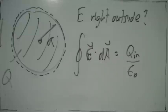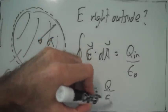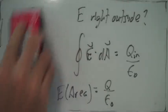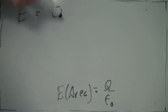We have the electric field at the Gaussian surface times the area of the Gaussian surface equals the charge inside divided by epsilon naught. We know the area of the Gaussian surface right outside, so we can calculate the field right outside the surface.